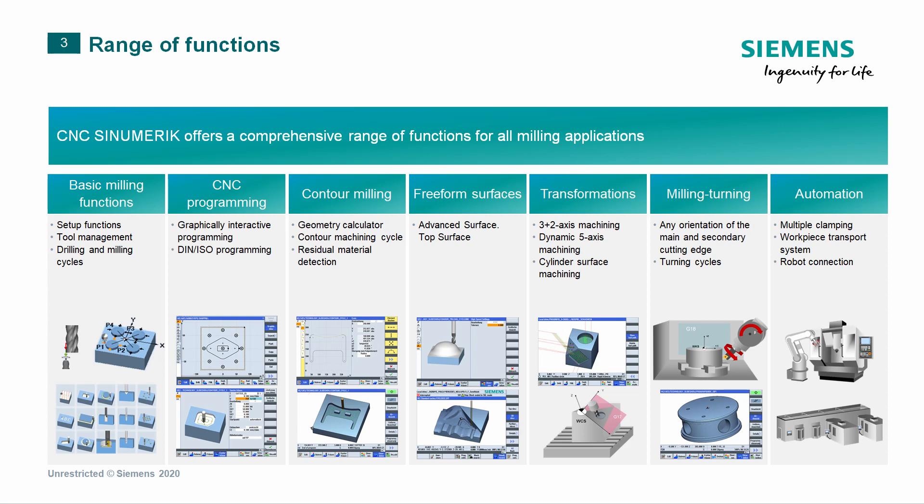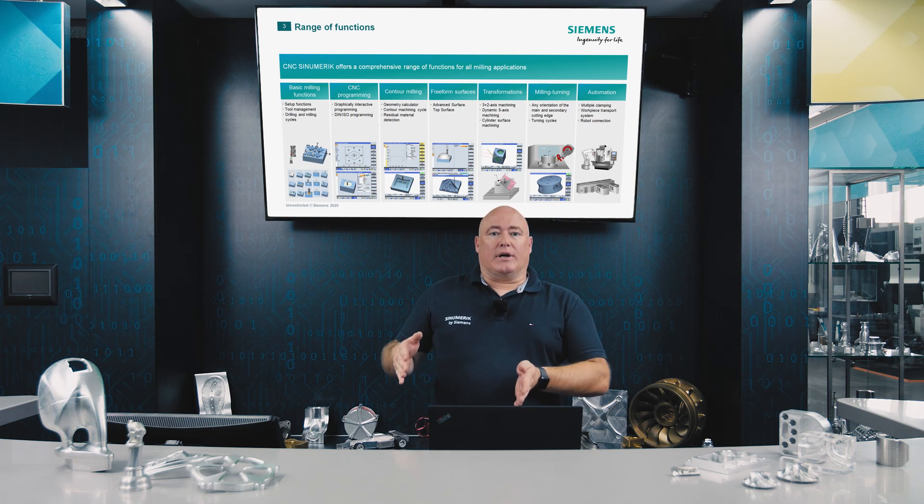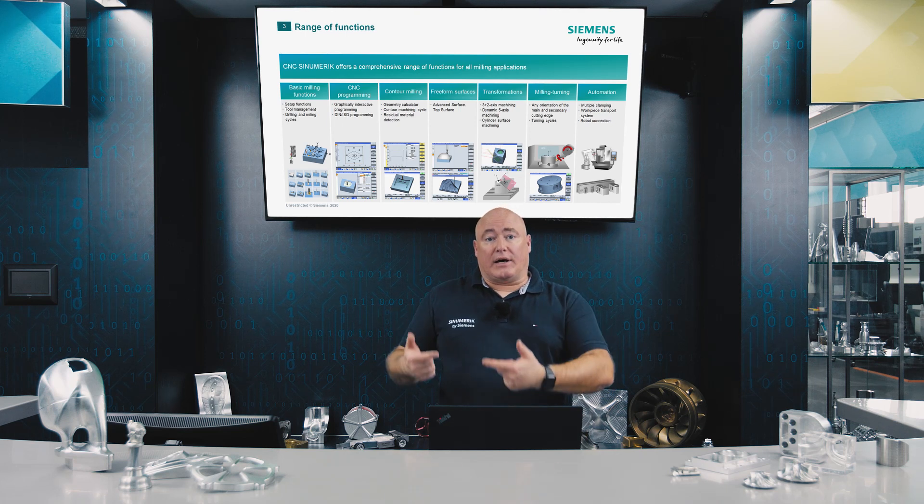The functional scope of the CINEMERIC control provides the best possible solution for all production tasks. This starts with basic milling functions, covers contour applications including the contour calculator, then free-form surfaces and necessary transformations of special axes, mill turning applications as a unique selling point, and finally mass production with robot applications ensuring maximum efficiency.